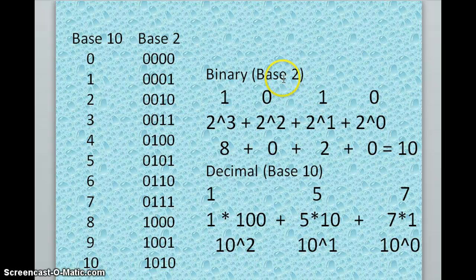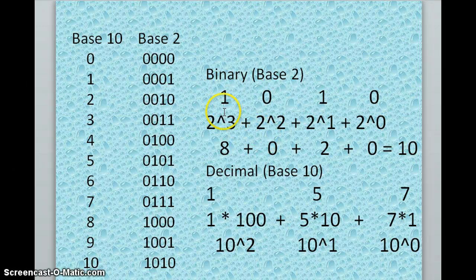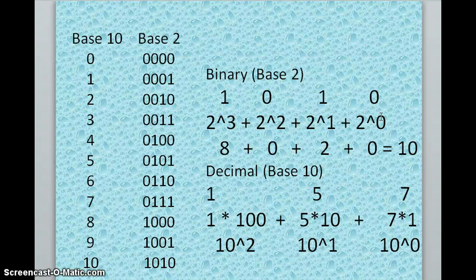So let's see how we got that. First, we have to recognize that each place is representative of a power of the base. In this case, it's base 2, so powers of 2. This is the zeros place, the ones place, the twos place, the threes place. And once again, that's representative of the power, not the number.